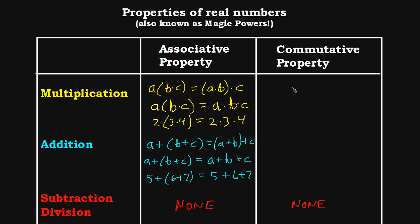Now let's talk about the commutative property of multiplication — another very powerful tool in our tool belt for algebra problems. The commutative property says that if I have A times B times C, I can rearrange those factors when they're all multiplied together and get the same product. So C times A times B should give exactly the same result.